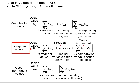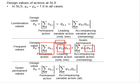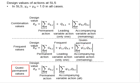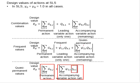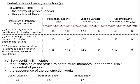For the frequent value, it is the summation of permanent actions plus the leading variable multiplied by ψ₁, while the remaining accompanying variables are multiplied by the quasi-permanent factor ψ₂. For the quasi-permanent value, the design value equals the summation of permanent actions plus the summation of variable actions multiplied by the reduction factor ψ₂. This concludes the application of partial factors of safety for actions under both the ultimate limit state and the serviceability limit state.